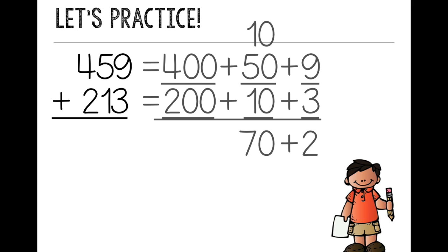Then I go to my hundreds place. 400 plus 200 equals 600. So my answer is 600 plus 70 plus 2.